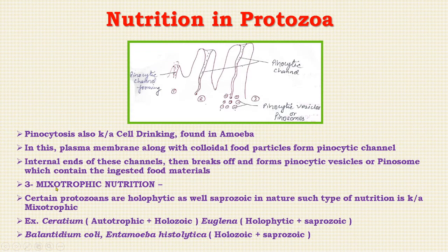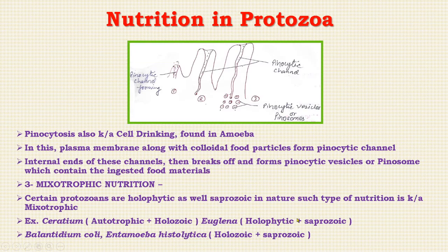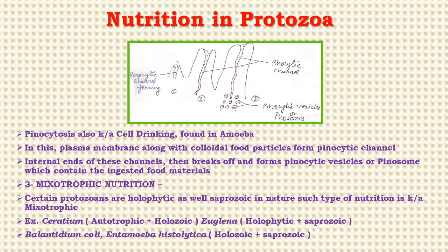The third type is myxotrophic nutrition. Certain protozoans are holophytic as well as saprozoic — such mixed nutrition is known as myxotrophic. For example, in Ceratium it is autotrophic and holozoic; in Euglena it is holophytic and saprozoic; in Balantidium coli and Entamoeba histolytica it is holozoic and saprozoic.